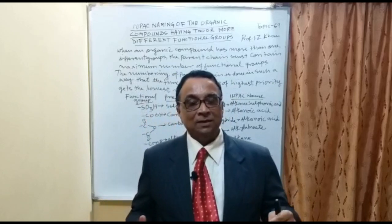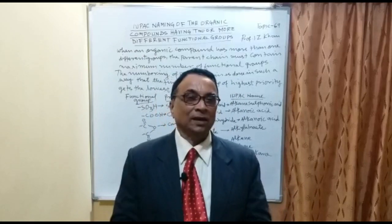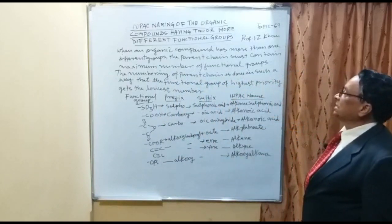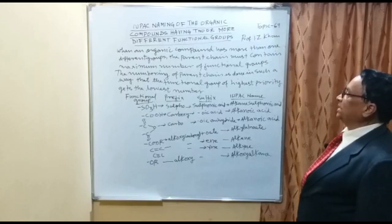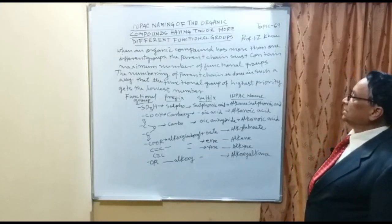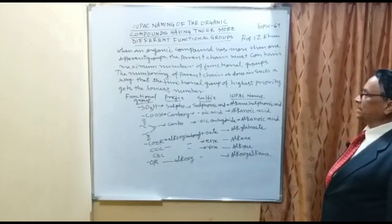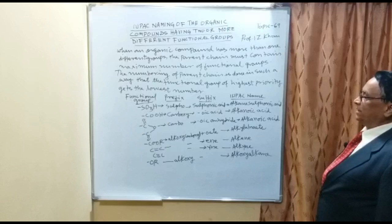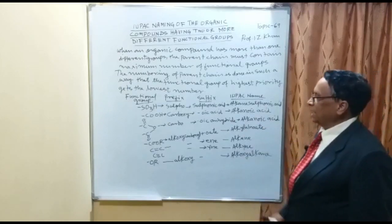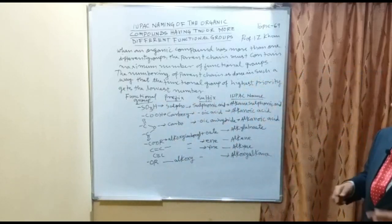When an organic compound has two, three, or four different functional groups, the parent chain must contain the maximum number of functional groups. The numbering of the parent chain is done such that the functional group of highest priority gets the lowest number. In this table I have given some functional groups with their prefix, suffix, and IUPAC name.